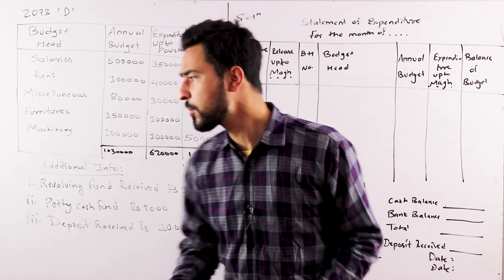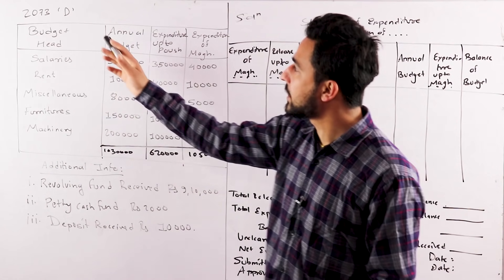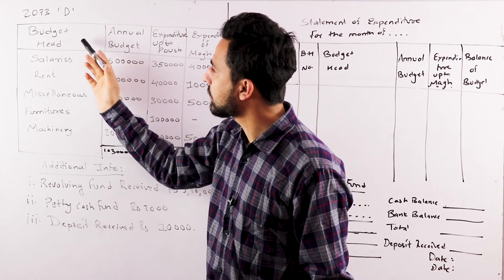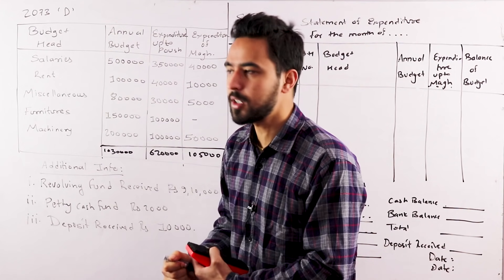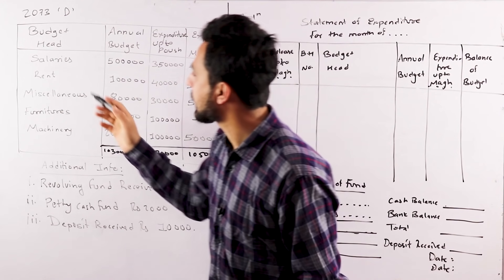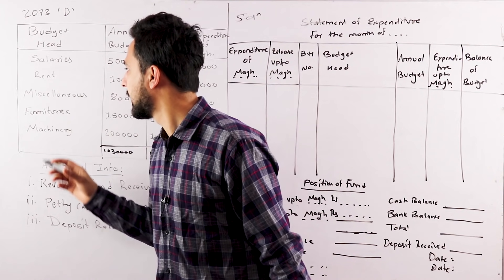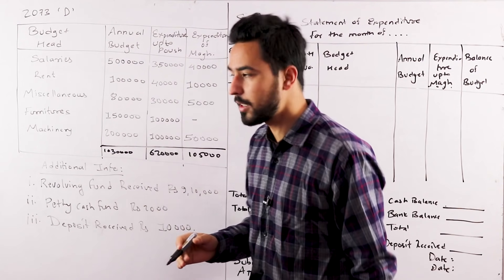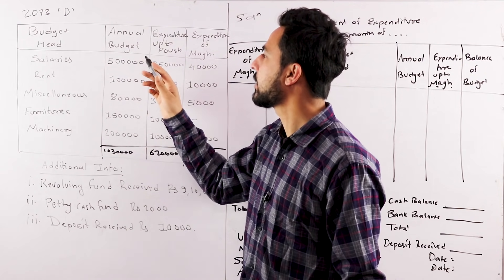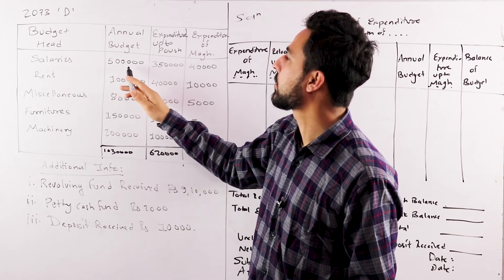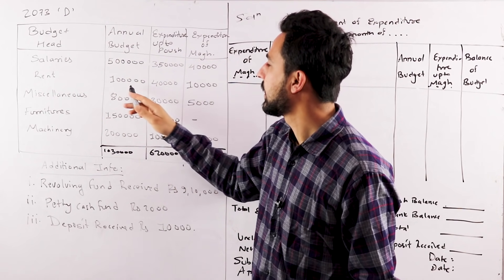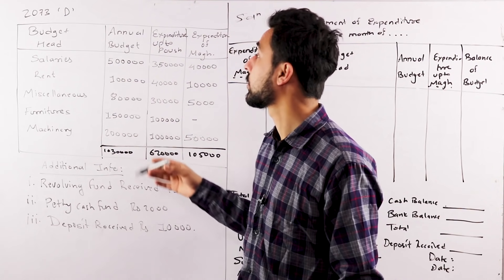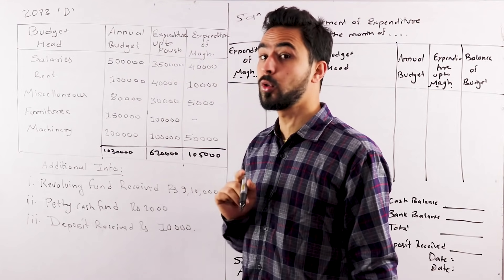Now, looking at the 2073 question — what is the table? The table is the budget. The budget includes salary, rent, maintenance, furniture, and machinery. This is the annual budget. The salary budget is $5,000,000 and the budget is $2,000,000. The expenditure is up to push.